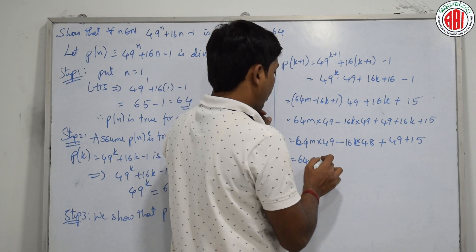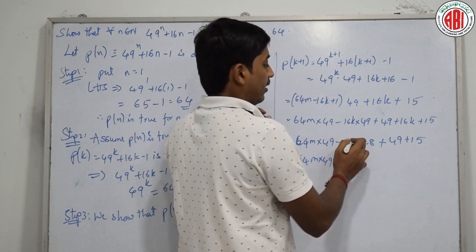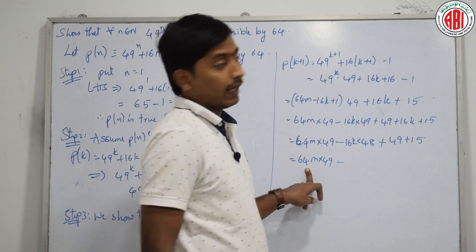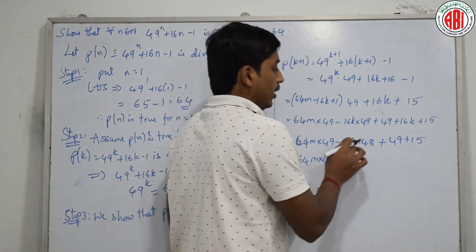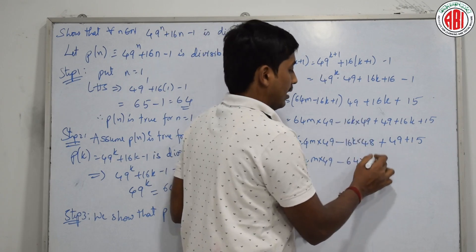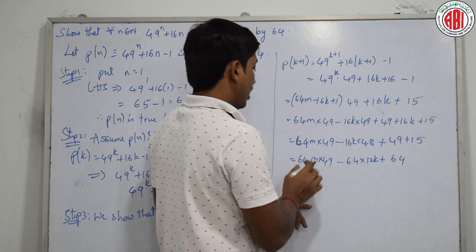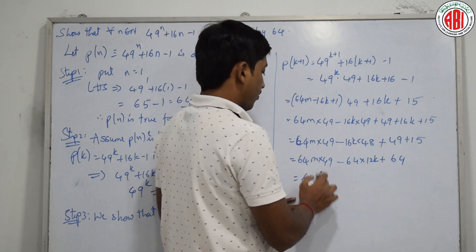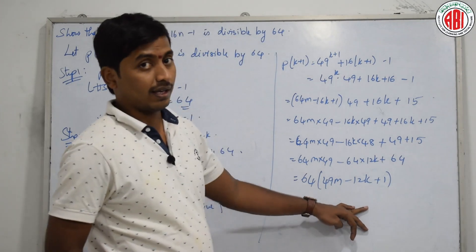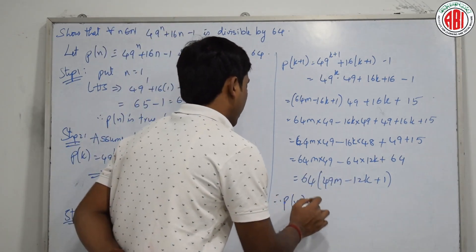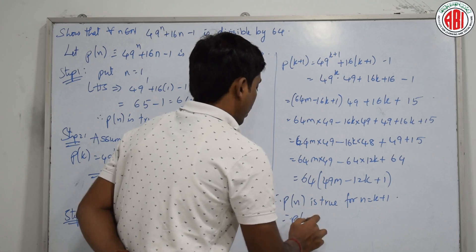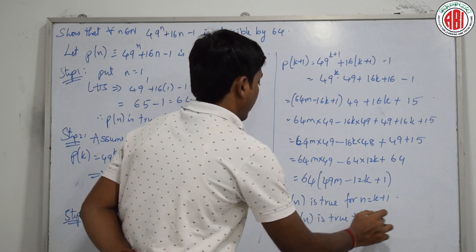Now, 16 × 48 = 16 × 48. Can I write 16 × 48 as 64 × 12? Yes, since 64 × 12 = 768 = 16 × 48. So the expression becomes 64·49m − 64·12k + 64, and 49 + 15 is also 64. Taking 64 as common: 64(49m − 12k + 1). Therefore, this is divisible by 64. So P(n) is true for n equal to k plus 1, and thus P(n) is true for all n belonging to N.